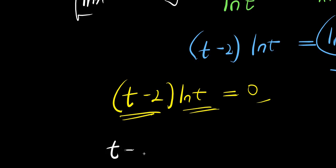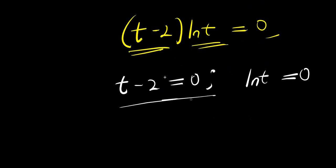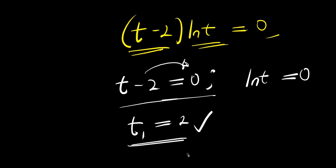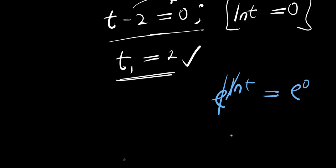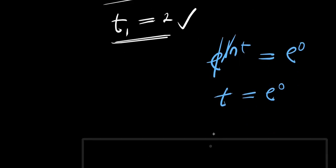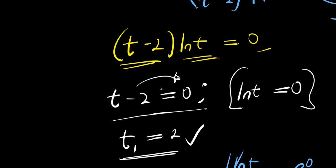I equate each factor to 0: t minus 2 equals 0, and ln t equals 0. For t minus 2 equals 0, I move the negative 2 over and get t equals 2 — this is the first solution. For ln t equals 0, I use e: e to the power of ln t equals e to the power of 0, so t equals e to the power of 0, which equals 1. This second method still gives us the two solutions t equals 1 and t equals 2, and you can use any method you prefer.